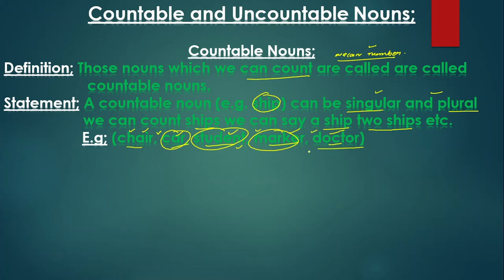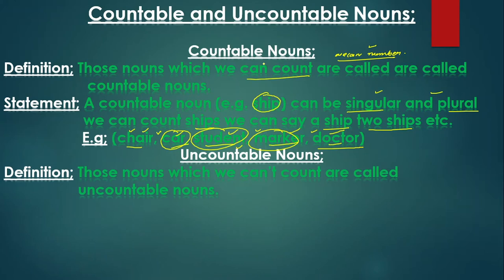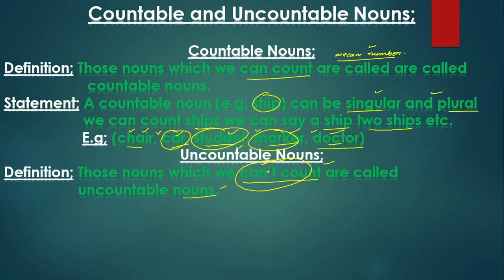The next topic is uncountable nouns. What are uncountable nouns? Those nouns which we cannot count are called uncountable nouns — totally the opposite of countable. Those nouns which we cannot count are called uncountable nouns.